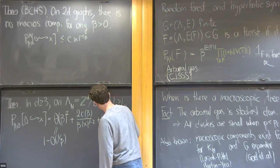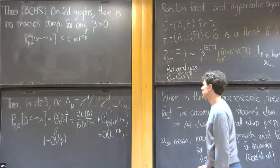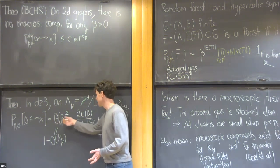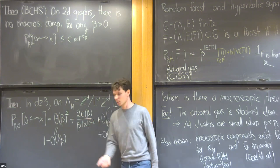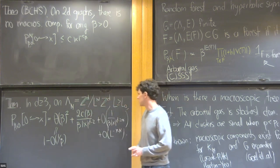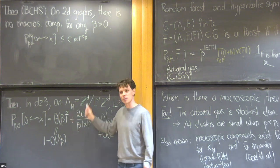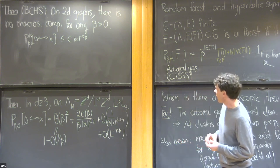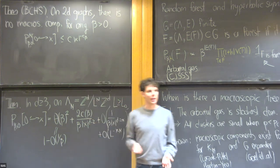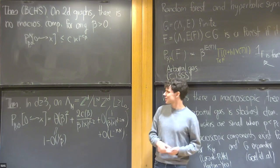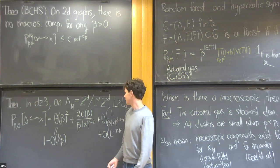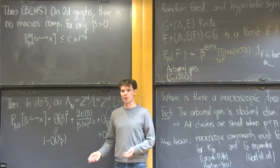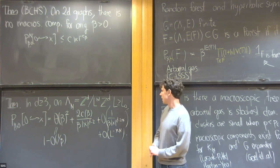In particular, this statement means that in three dimensions on the sequence of tori, there is a macroscopic tree of density theta squared, and corrections to the connection probability decay polynomially — as opposed to what you would get in ordinary supercritical percolation, where the correction would be exponential.